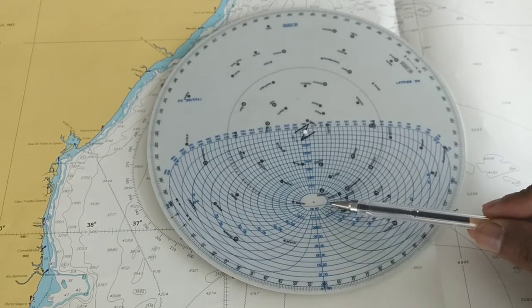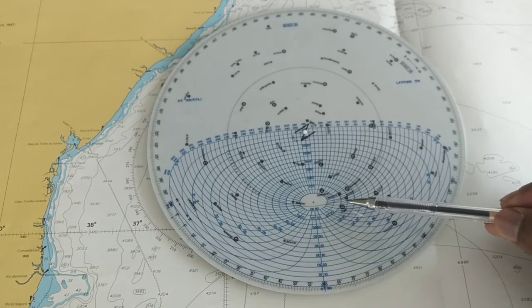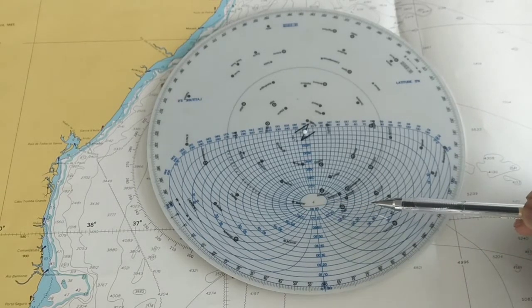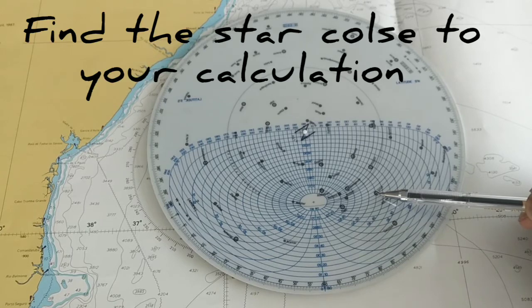This is horizon, this is zenith. 80 degrees, 70, 60, 50, 40, 45. Okay, so this is 45 degrees.